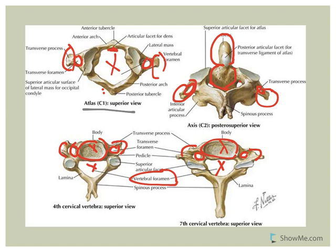If you run your finger down someone's spine, you're usually feeling the spinous process. On cervical vertebrae, the spinous processes tend to be bifid. The atlas and axis don't have very obvious spinous processes. The atlas is very ring-like, has no vertebral body, and has a very classic look. The axis is distinctive because of the dens.